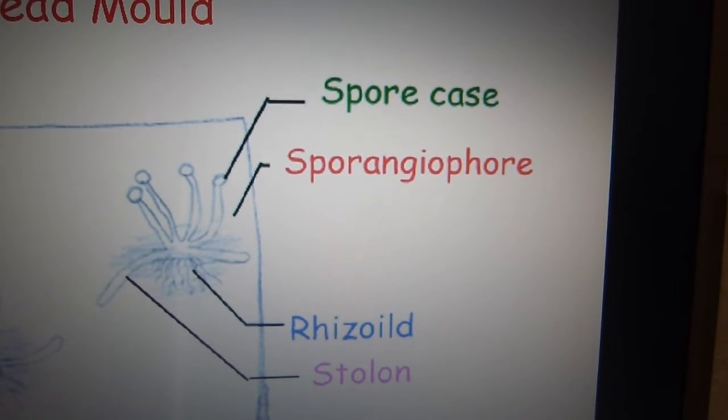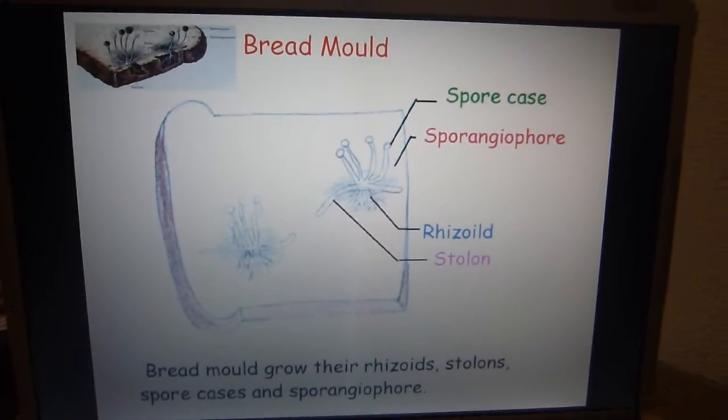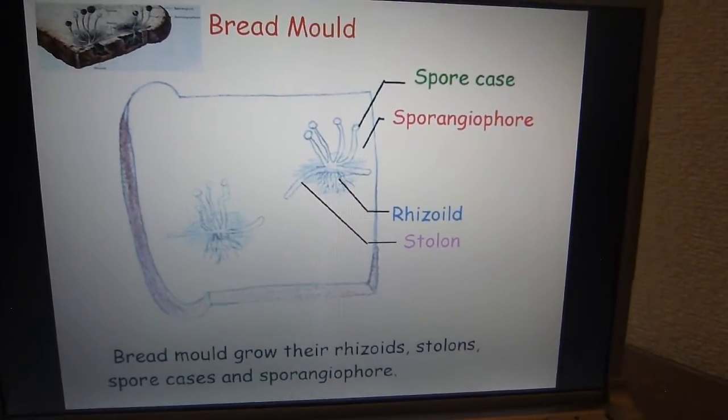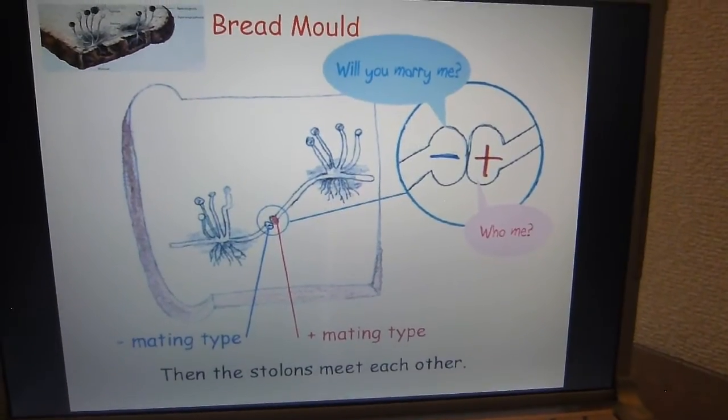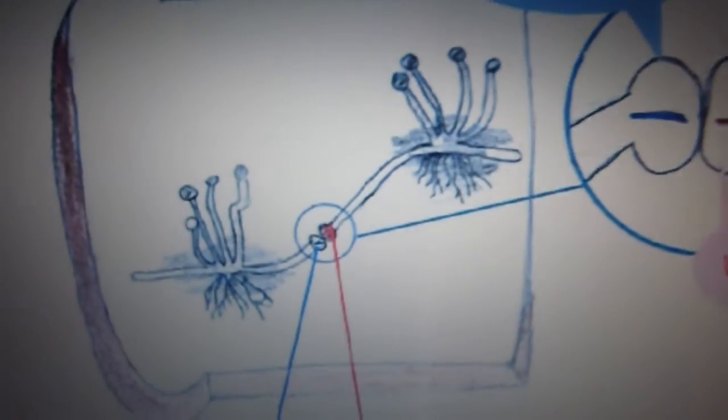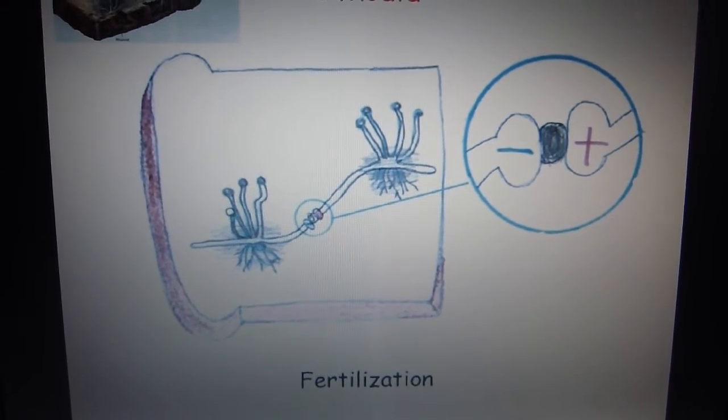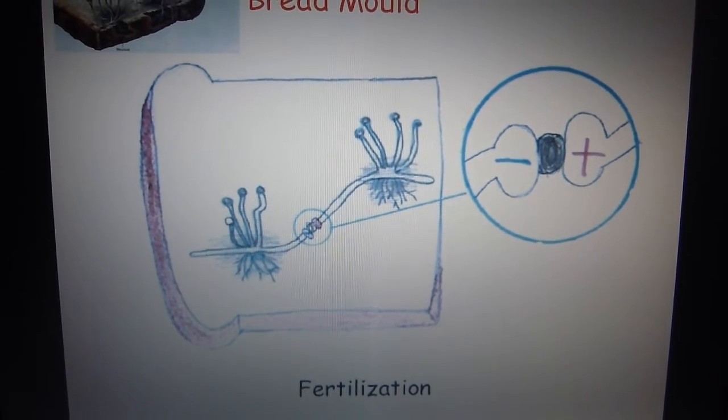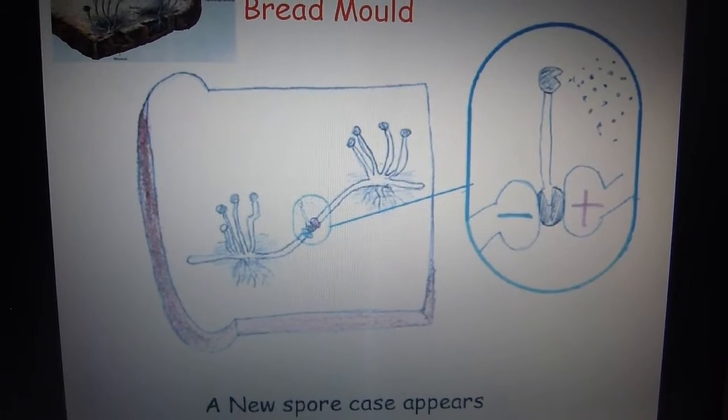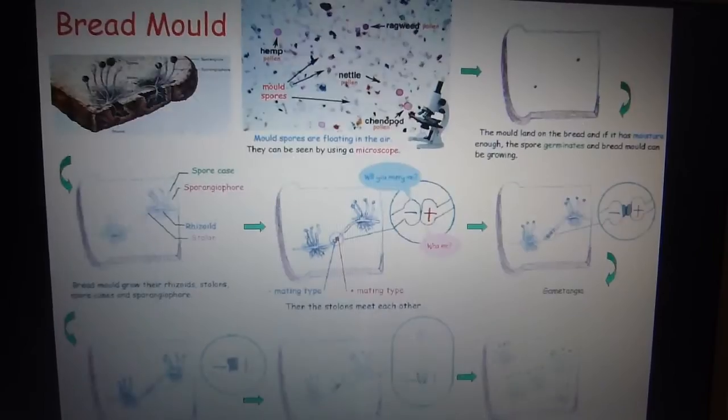Where the stolons meet each other, mating type plus and minus type. Will you marry me? Mating type plus. Gametangia, fertilization, a new spore case appears. Bread mold reproduced by producing spores and this is the summary.